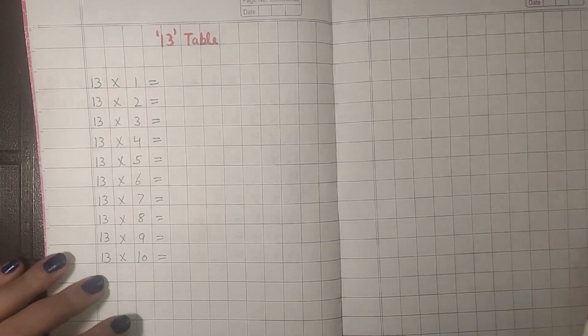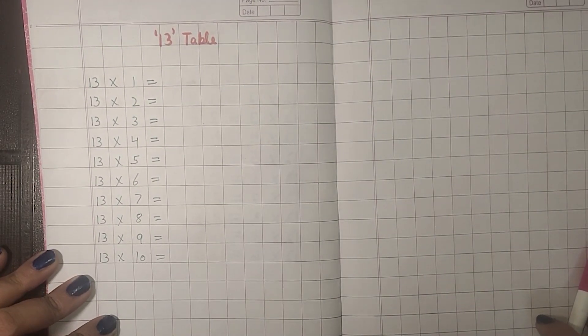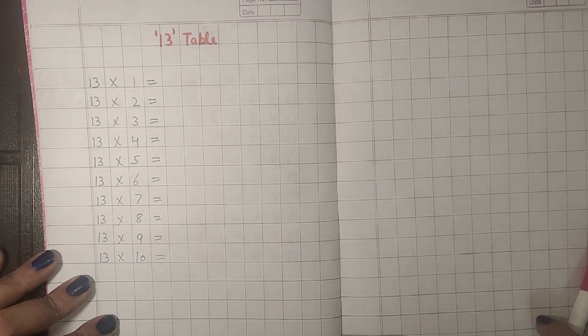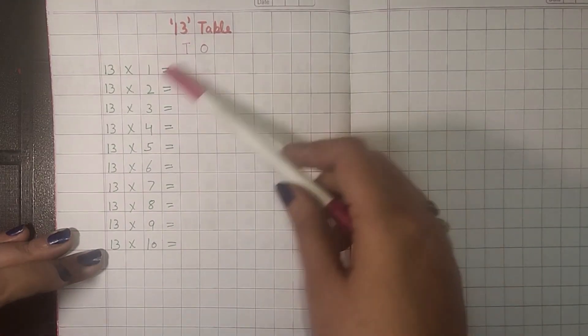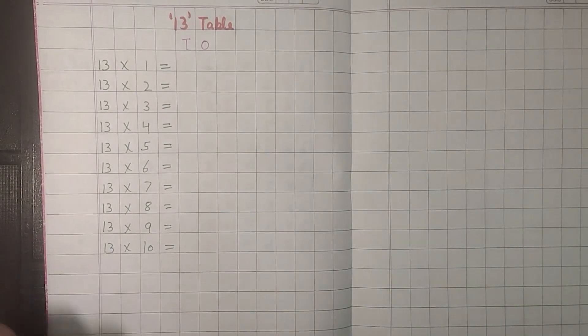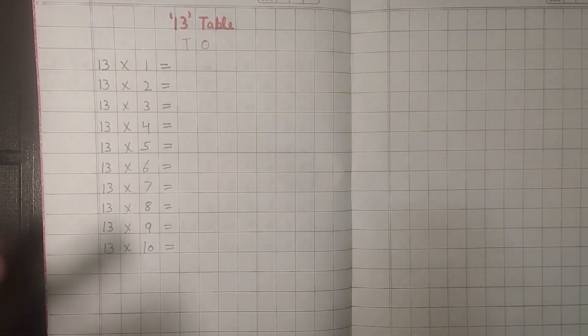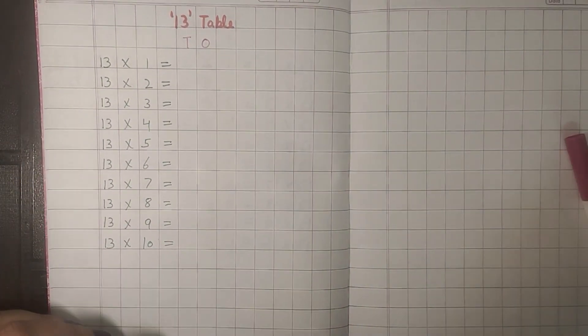Next, we will do the table of 13, the 13 times table. For this, we will make a grid of 3 by 3 — that is, the grid of tic-tac-toe.